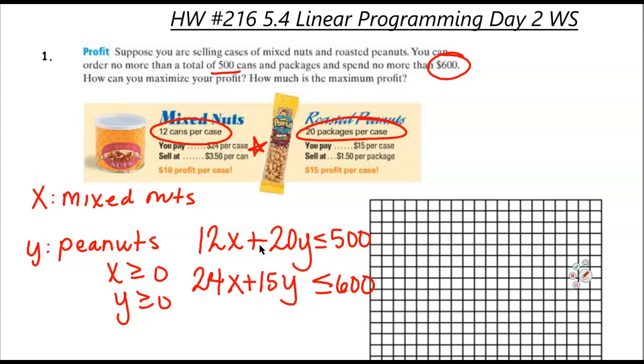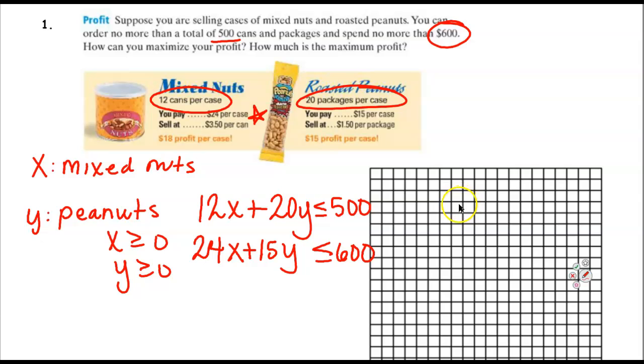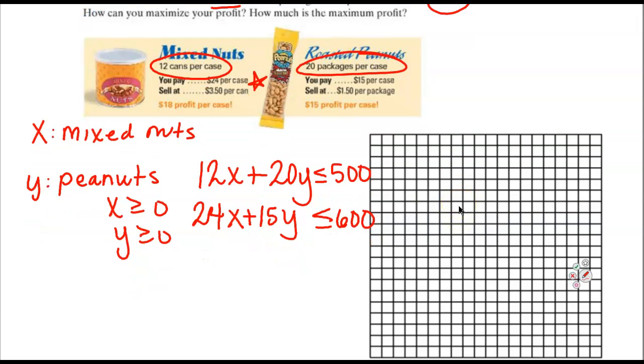So now what I'm going to do is I'm going to take these large numbers and I am going to simplify and break those down. Let me go ahead and just focus on making these smaller numbers so it's a little bit easier for me to work with these on a graph. So first of all, this equation right here, I can simplify everything down by a 4. So that's going to be 3X plus 5Y is going to be less than or equal to 125.